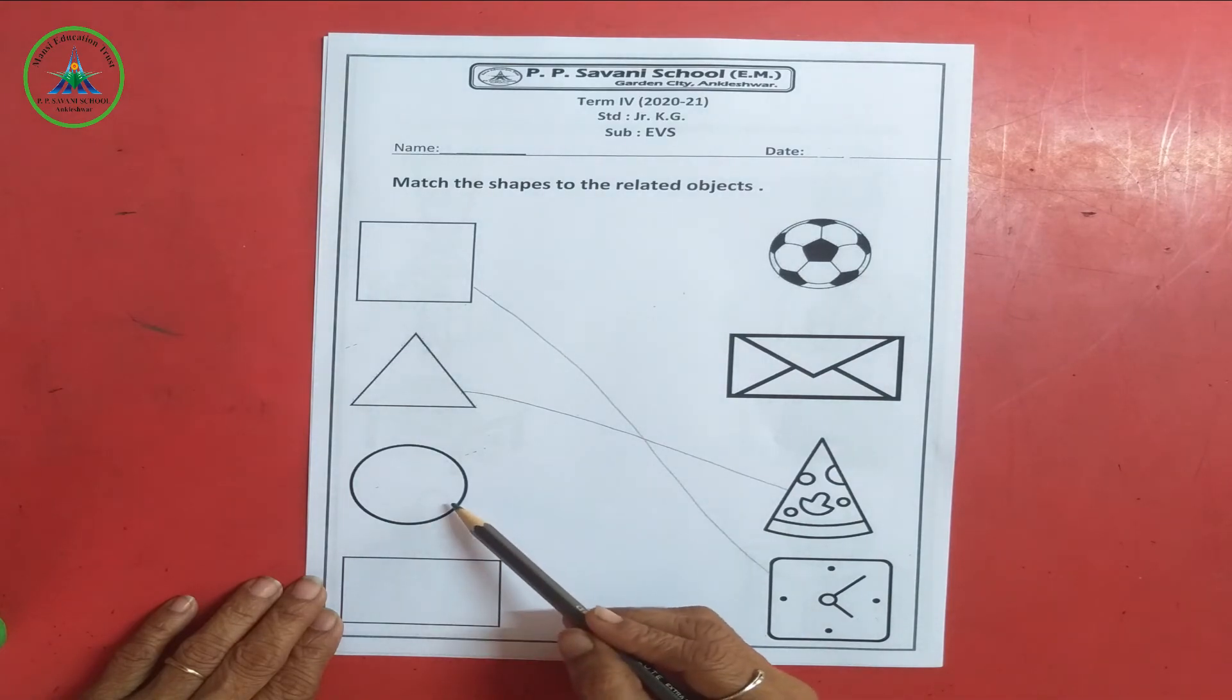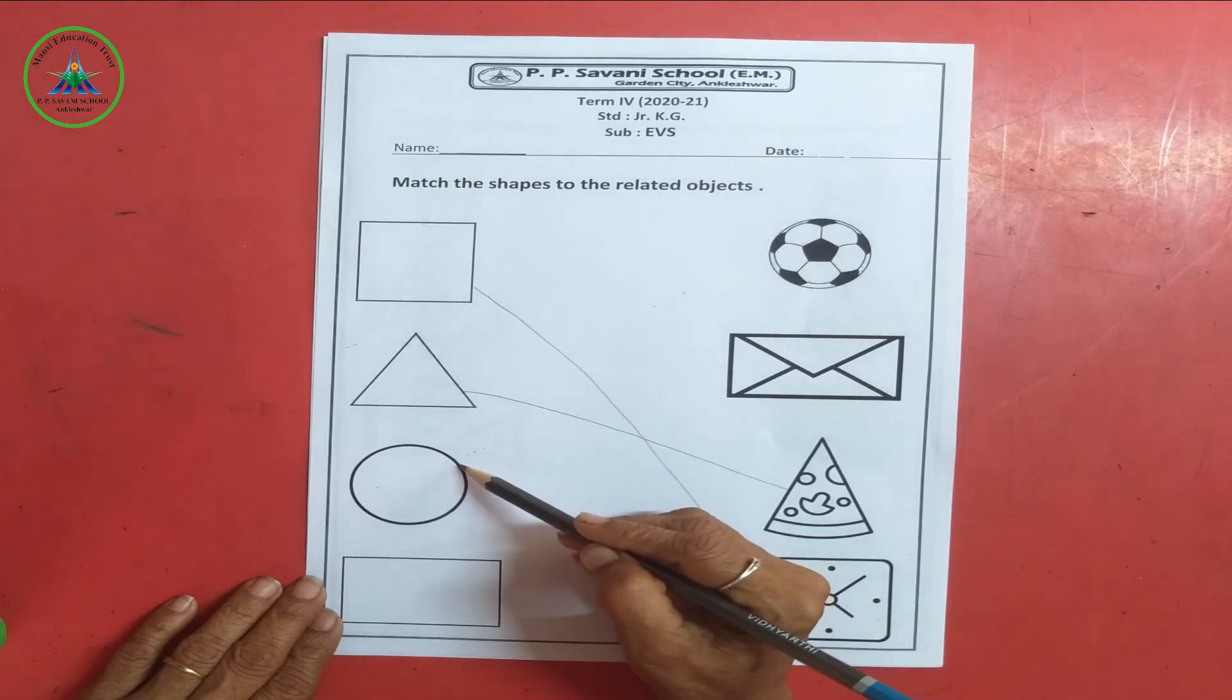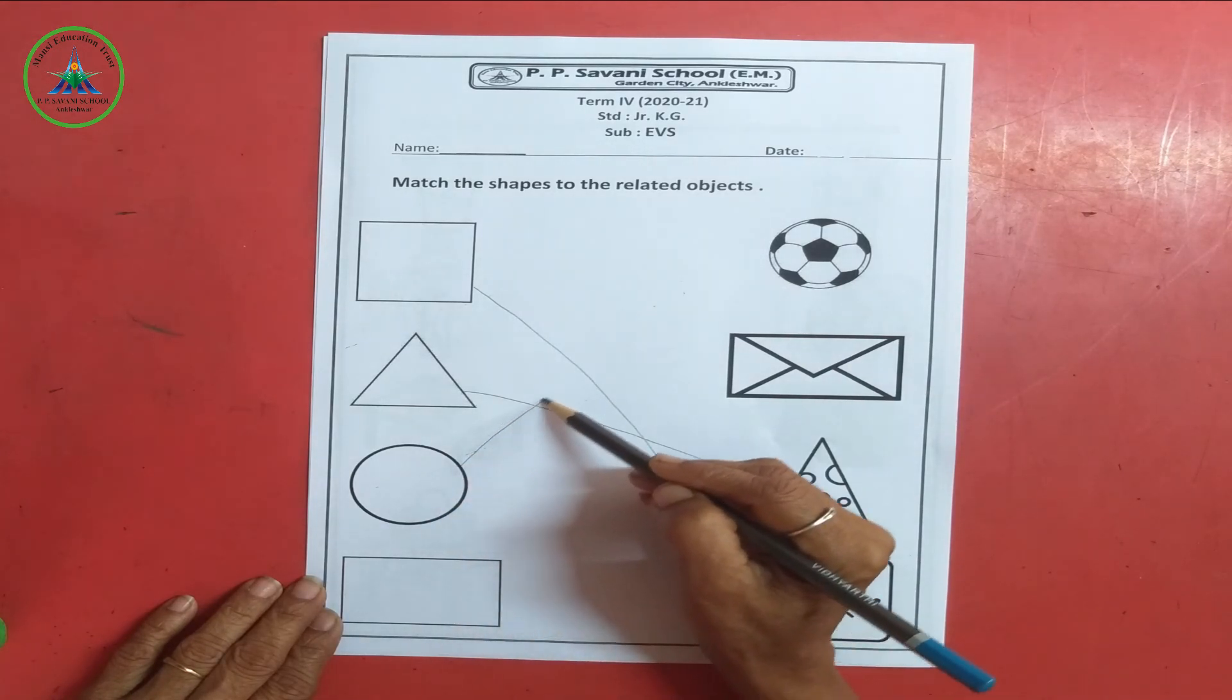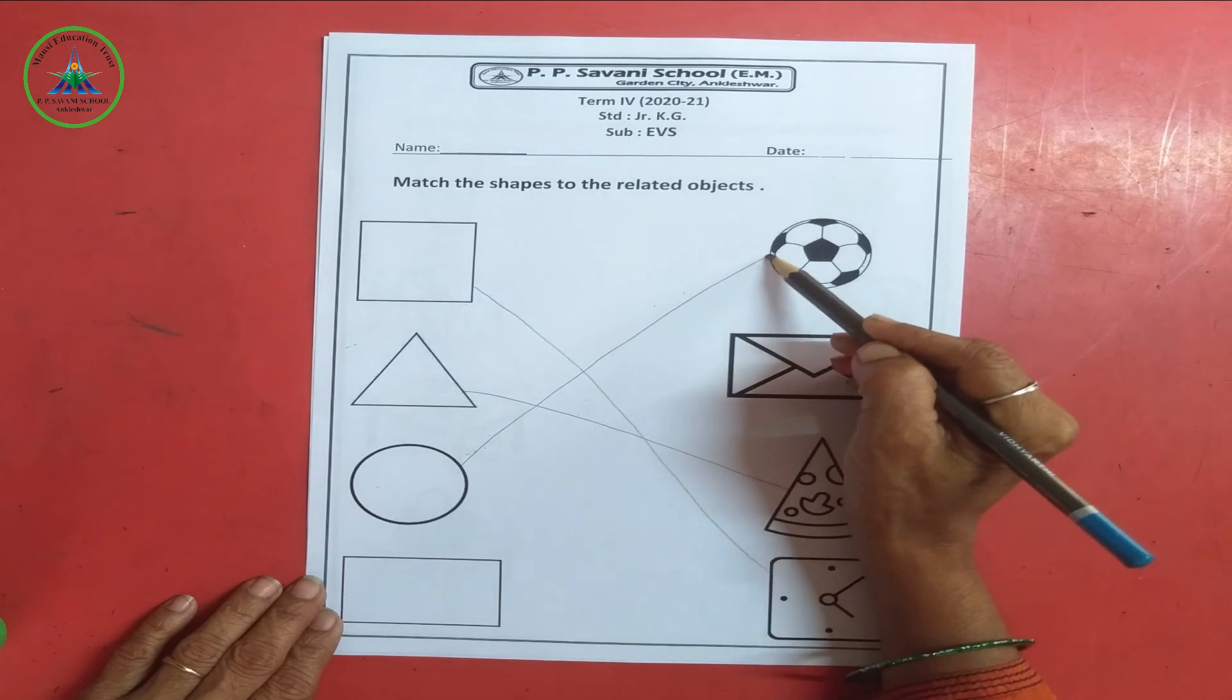And look at it. Which shape is this? This is a circle. Now we will match circle shape with a ball. Okay.